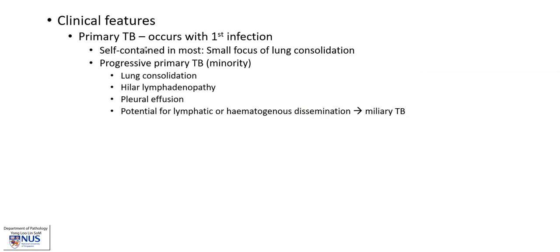There's primary TB. This occurs with the first infection, so the patient is not previously sensitized. Most of the time it is self-contained in the small focus of consolidation in the lung. However, in a minority of patients, this can progress to have larger areas of consolidation in the lung as well as hilar lymphadenopathy, and sometimes with an accompanying pleural effusion or pleuritis. And there is also a danger of lymphatic and hematogenous dissemination to the lung itself or to other organs.